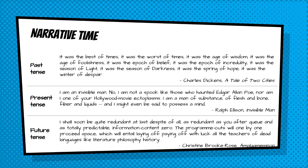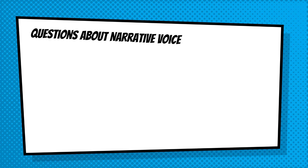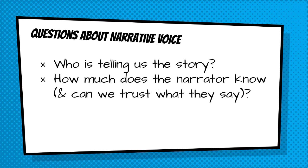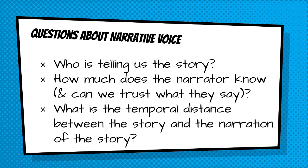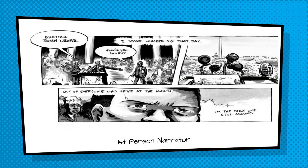Now let's take a look at a few examples from comics. John Lewis's March trilogy is told to us in the first person and in the past tense — he's telling us the story as it happened to him, 60 years after the events of the story. More commonly, in superhero comics, we often see the third person, a narrator who is not a character within the story. In this old issue of Spider-Man, we see a third person narrator using the present tense. And finally, we can't talk about narrative voice in comics without at least mentioning Deadpool, who very famously has multiple narrators, or multiple voices talking to him and us.